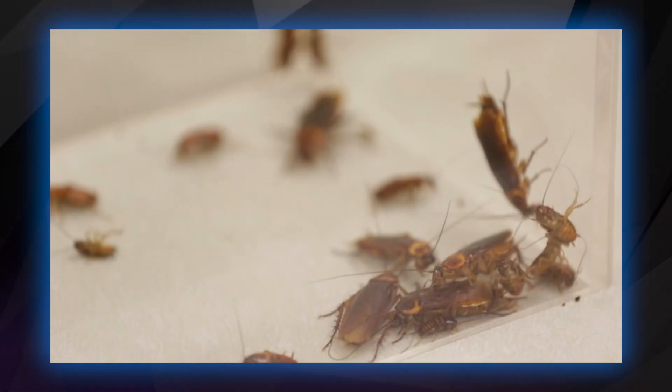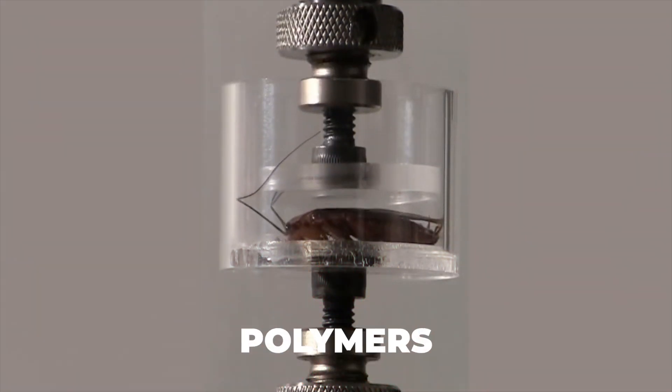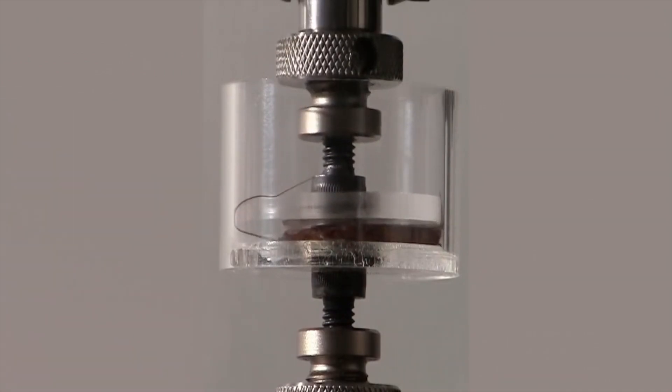They then used what they learned to create a robot cockroach. Roboroach is part of the emerging field of soft robotics, which uses flexible materials such as polymers instead of metals or rigid circuit boards.